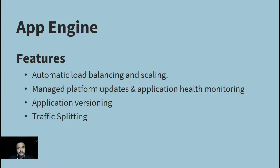In this scenario App Engine plays a vital role. It gives you the ability to create multiple versions of your application and split your traffic amongst them. For example, you can convert 10% of your traffic to the new version, test it, and see if that application version is working as per your business requirements.